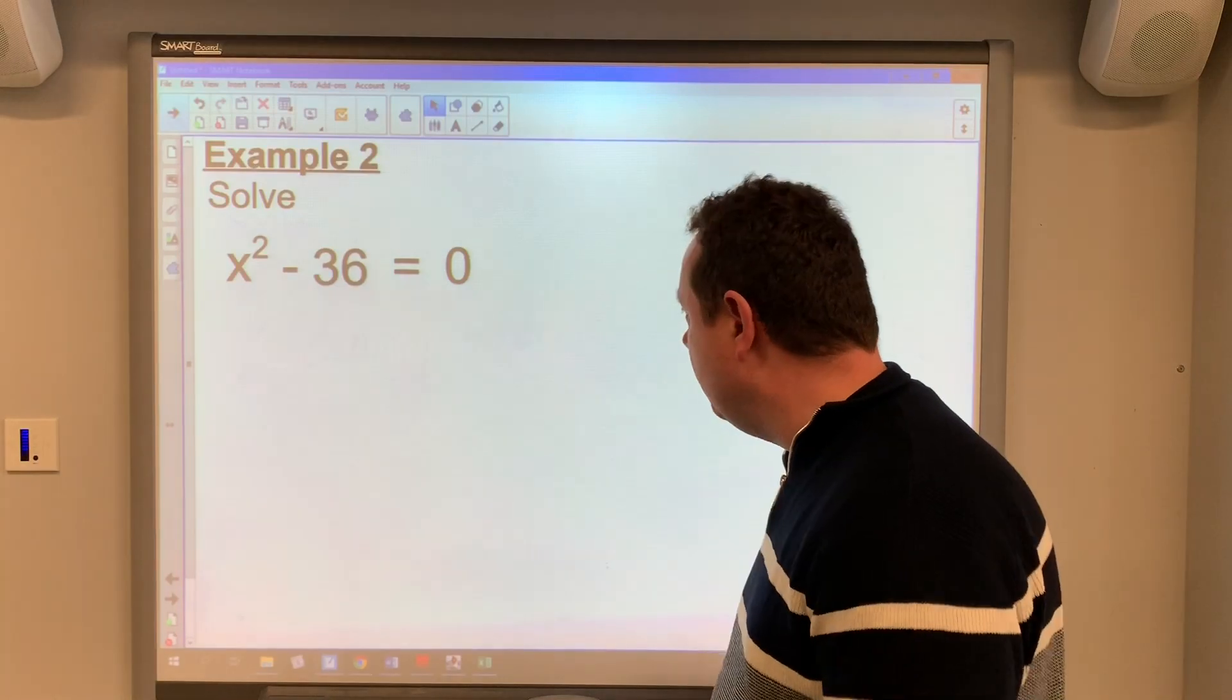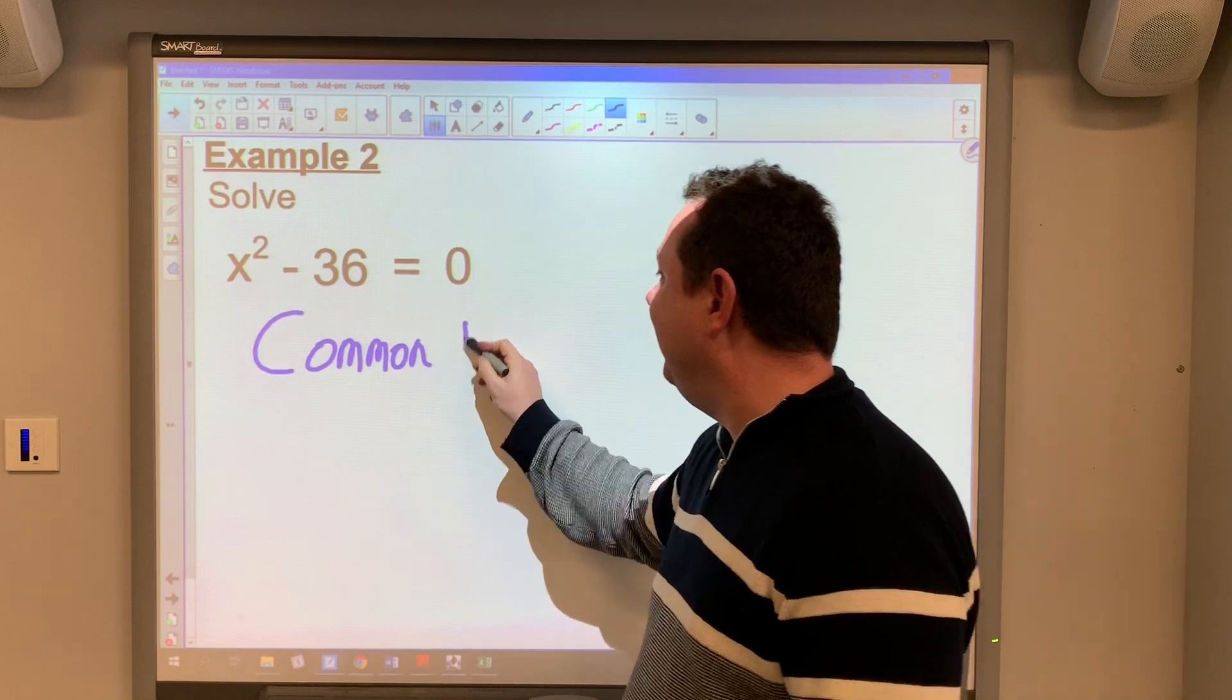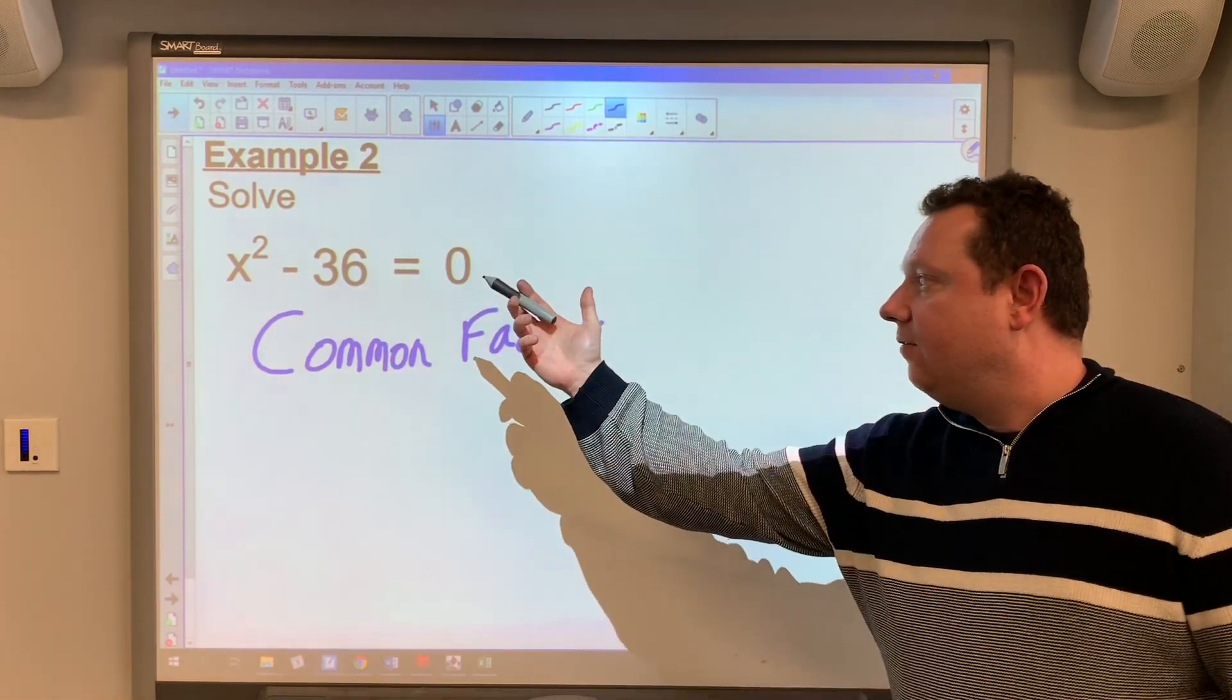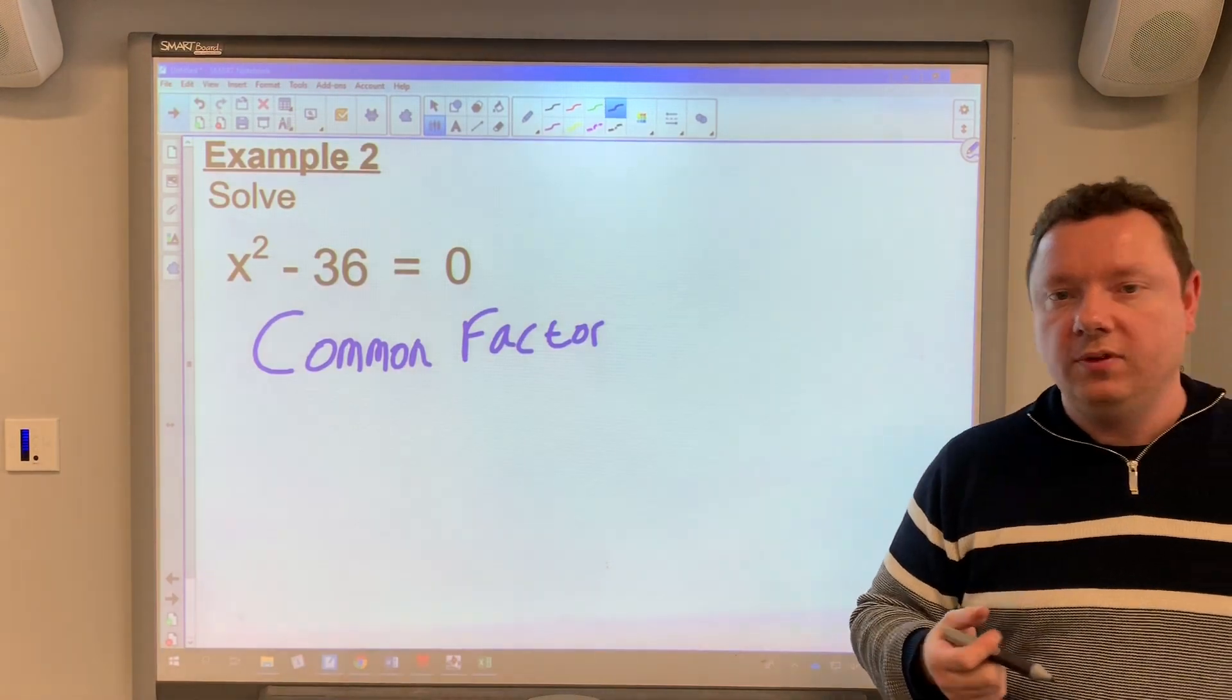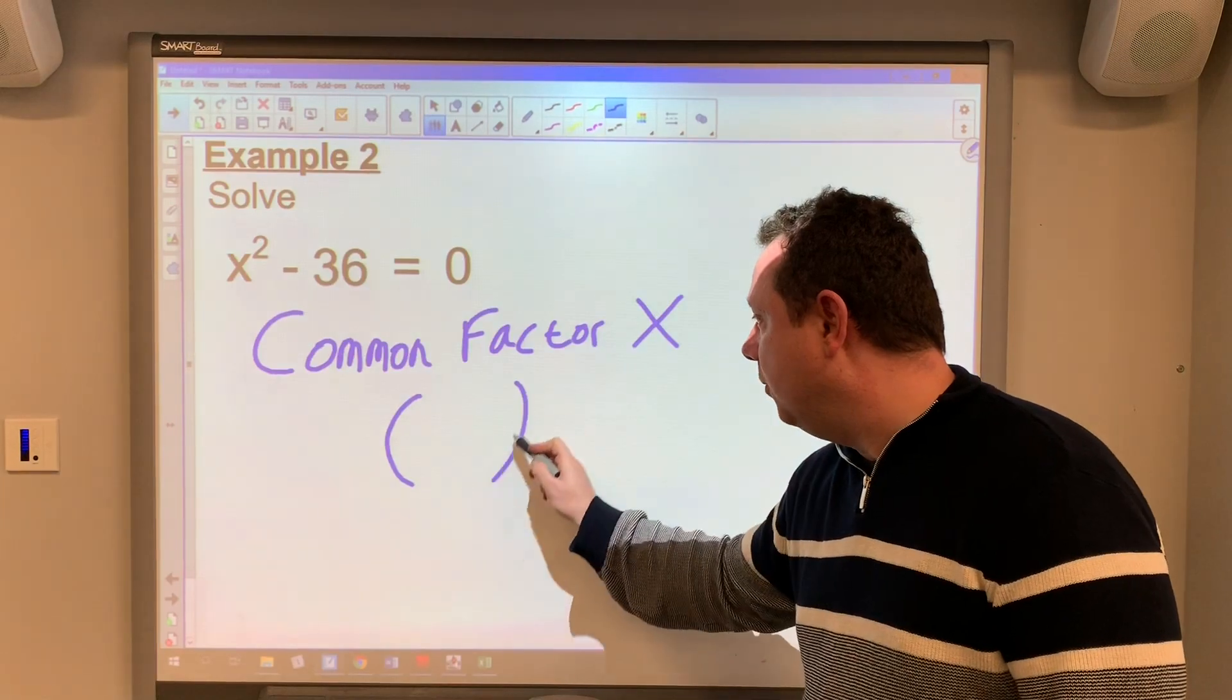I'm going to write down common factor. And that's just to remind myself that I need to check if there is a common factor. But in this case, there's no number or letter that goes into both the terms. So there's no common factor. So that immediately tells me I'm on double brackets.